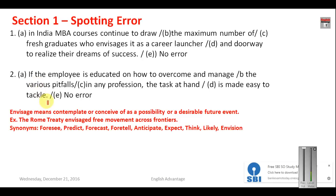Question number two: 'If the employees is educated on how to overcome and manage the various pitfalls in any profession, the task at hand is made easy to tackle.' This is a very tricky question. Since you are comparing two situations — if the employees are educated (first situation) versus the resulting situation — you need a comparative form. In place of 'easy' you have to say 'easier': the task will become easier to tackle. That is why this word is wrong here, and your answer will be D.